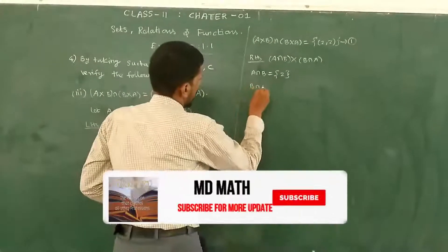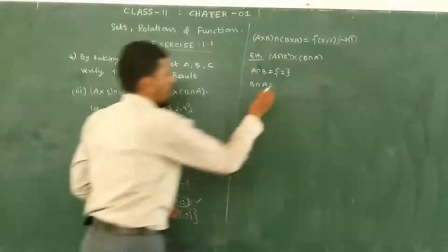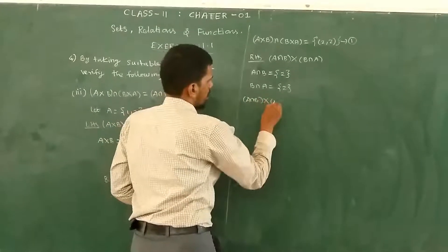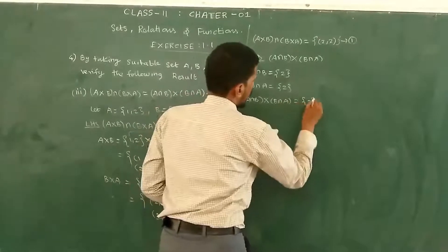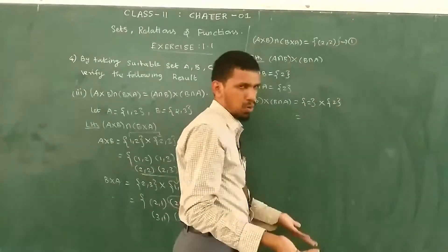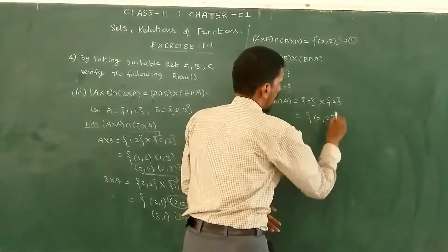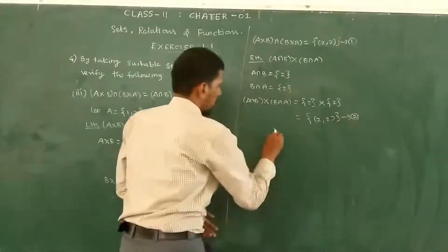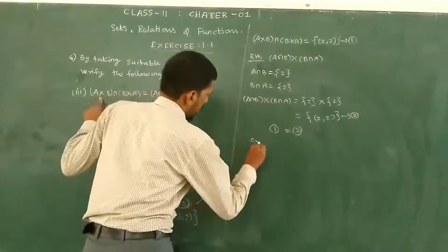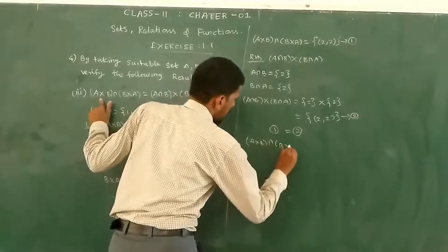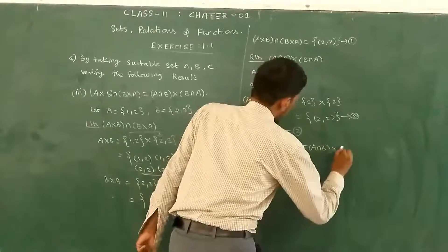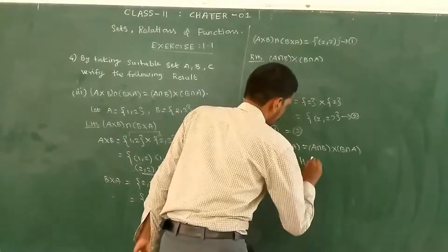B intersection A — B and A common — also equals {2}. So A intersection B cross B intersection A equals {2} cross {2}, which gives the ordered pair (2,2). The left hand side equals the right hand side: A cross B intersection B cross A equals A intersection B cross B intersection A. Hence proved.